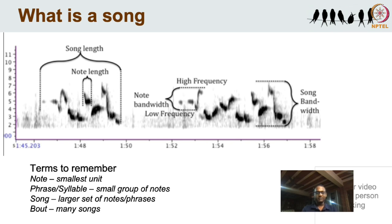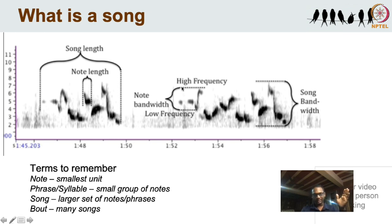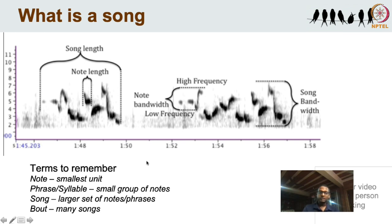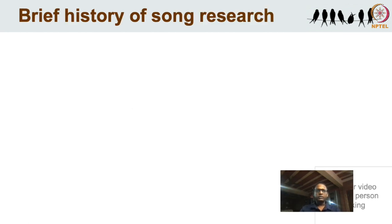An important aspect in bird biology is the song rate — how many songs per minute does a bird sing — because it is obviously linked to energetics and fitness. From a spectrogram, one can measure different aspects of song: note length, song length, the low frequency, the high frequency, and the bandwidth, which is the high frequency minus the low frequency. This is a biological component because females are thought to prefer birds with high frequency bandwidth that go from low to high frequency.